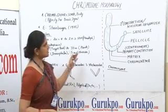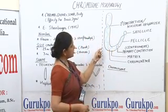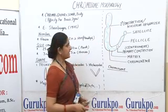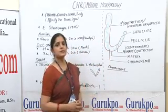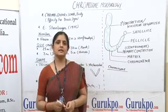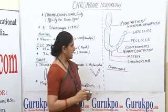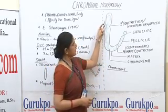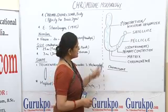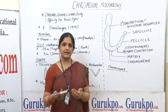Moving towards the structure and morphology of the chromosome: a single chromosome structure has its outer part covered with a membranous structure called the pellicle. Inside the pellicle lies a gelatinous substance known as the matrix. Pellicle and matrix are non-chromatic, non-genetic substances and do not participate in hereditary functions. Inside the matrix, one long coiled thread is present called chromonema, which consists of DNA and histone proteins — the actual genetic part.